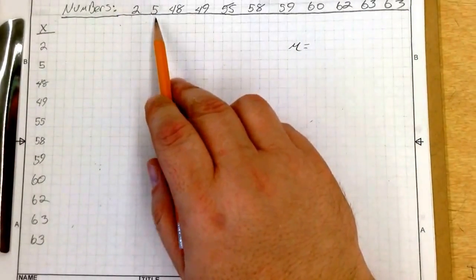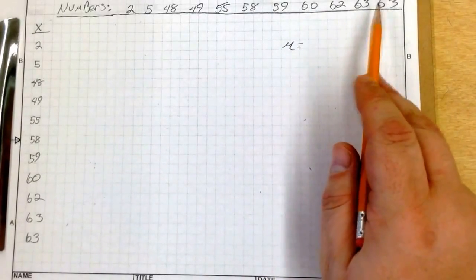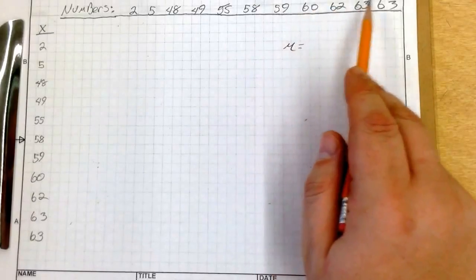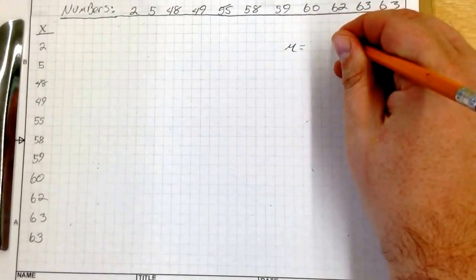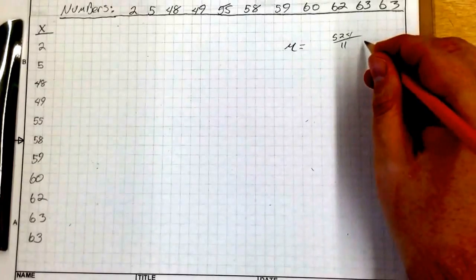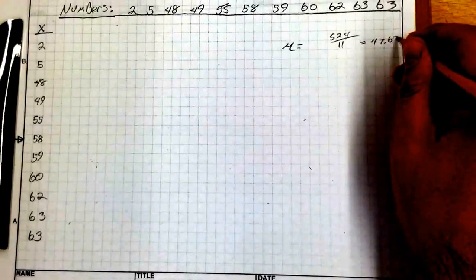Now if you remember, to calculate the mean, you add all these numbers up, then you divide by how many numbers there are. So there's 1, 2, 3, 4, 5, 6, 7, 8, 9, 10, 11. When I add all these up, equals 524 divided by 11.